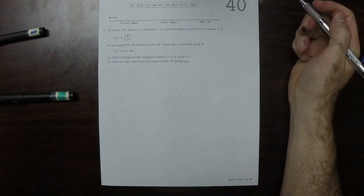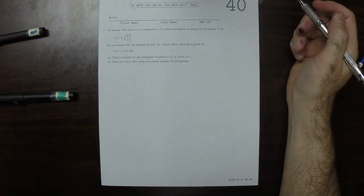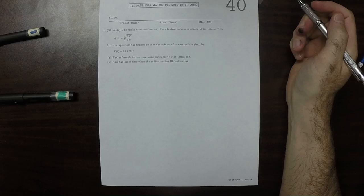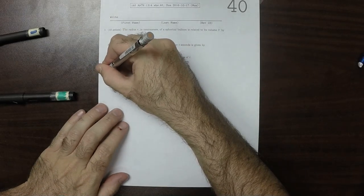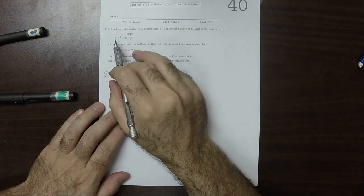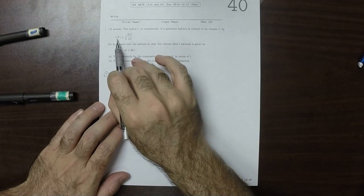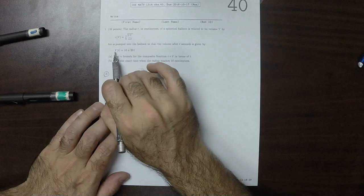This is the solution to Written Homework 40. Okay, so for part A, we have two formulas here. We have R of V, and we also have V of T.